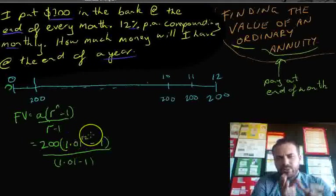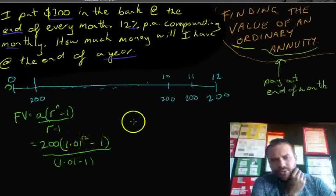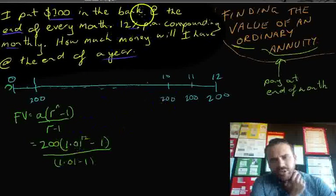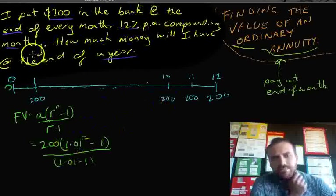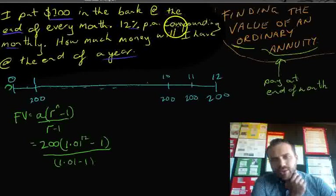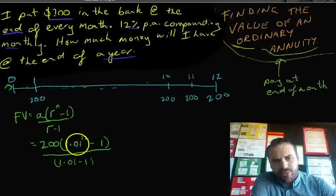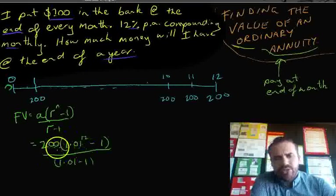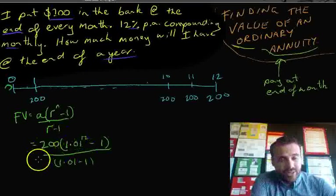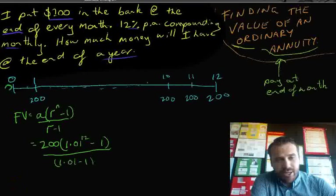Now, I haven't talked about 0.01 here, but I hope you got that under control. 12% per annum compounding monthly. If it's 12% per annum, but it's compounding monthly, it's increasing by 1% per month. That's where this 0.01 comes from. You should be able to type that into your calculator directly and end up with an answer. I'm going to give that a crack.